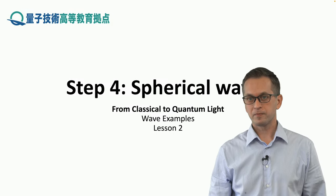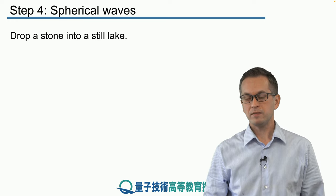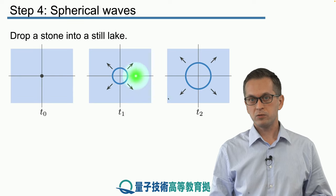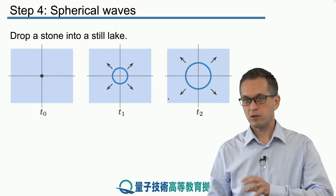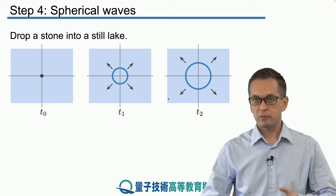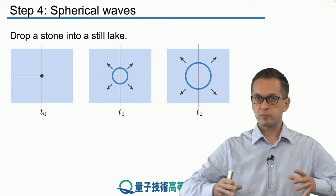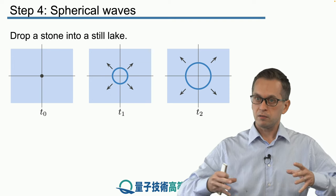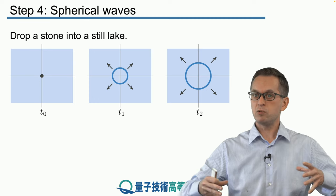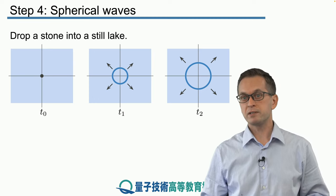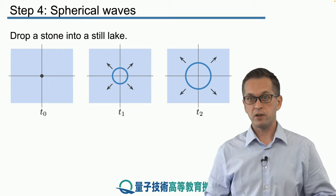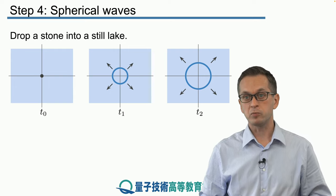Step 4: Spherical waves. Imagine a very still lake and you drop a stone in that lake. At the point where the stone hits the lake, we can set our origin of our coordinate system. As the stone hits the water, it produces a nice circular or ring-shaped wave that propagates outwards. At time t0 it hits the surface, at t1 the ring has a certain radius, at t2 the radius increases. Spherical waves are very similar, just in three dimensions, so the ring becomes a sphere.